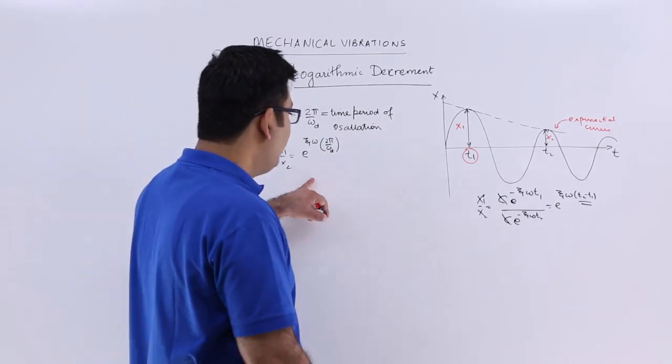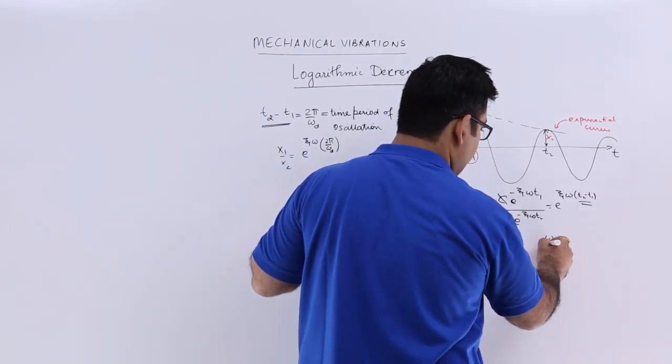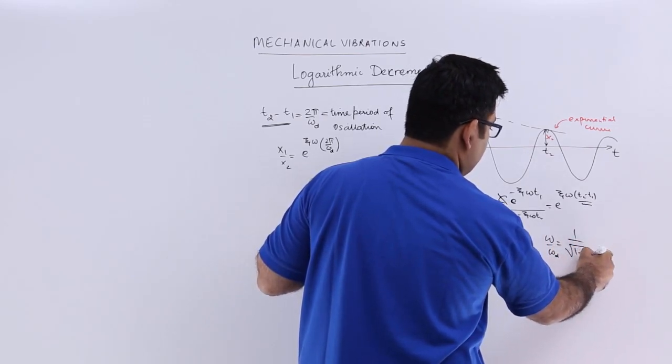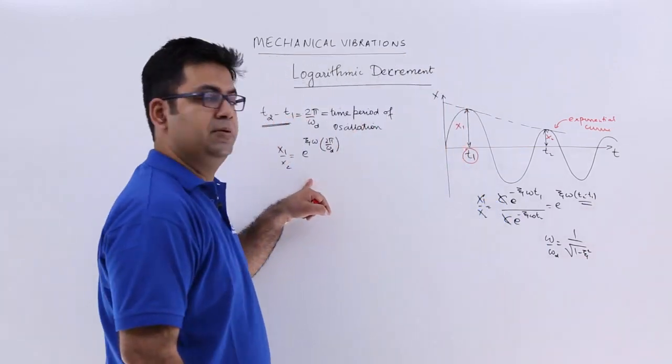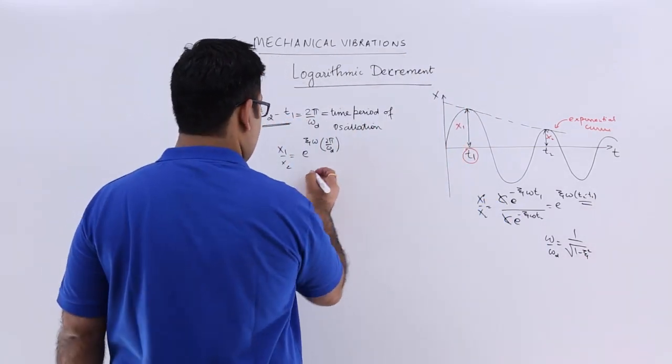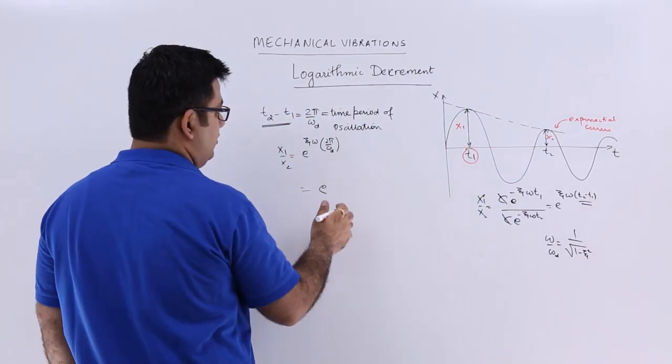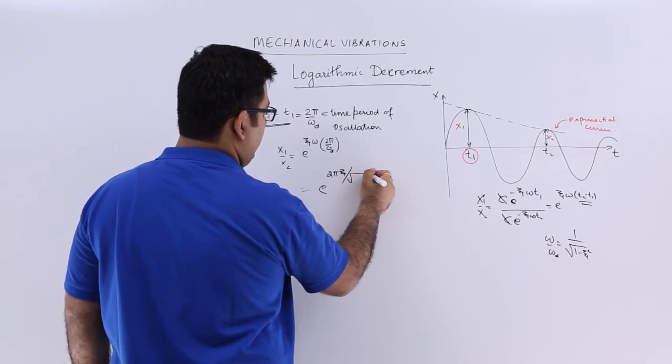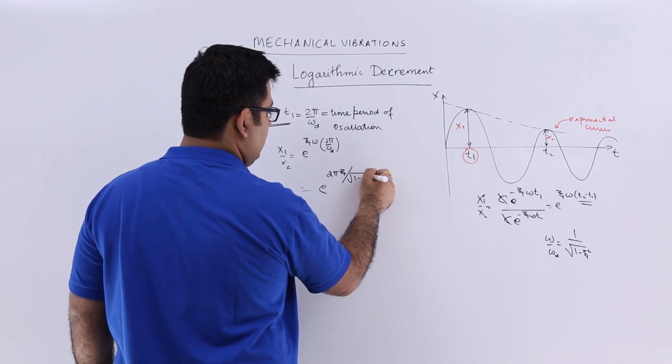Now, ω/ωd equals 1/√(1-ζ²). So this becomes e^(2πζ/√(1-ζ²)).